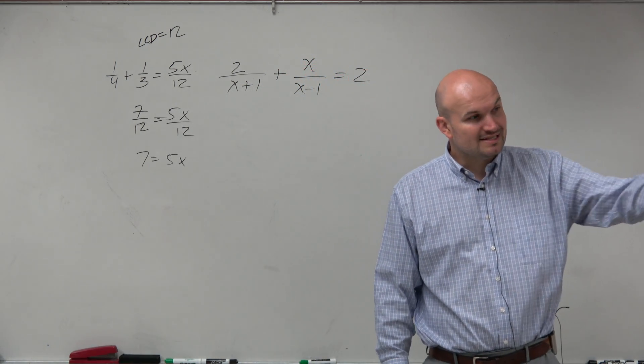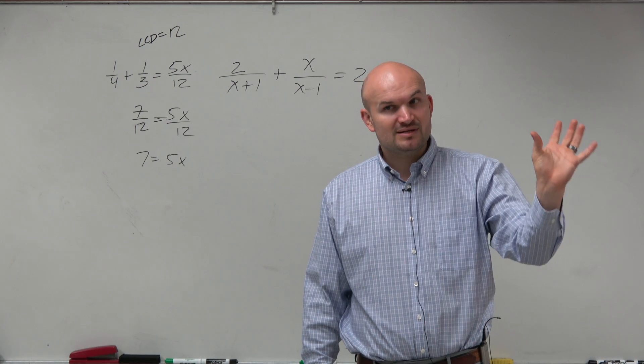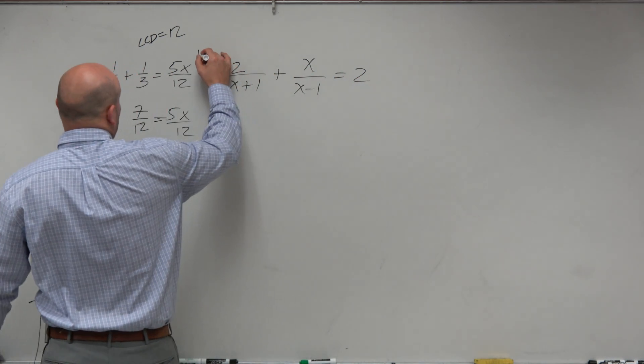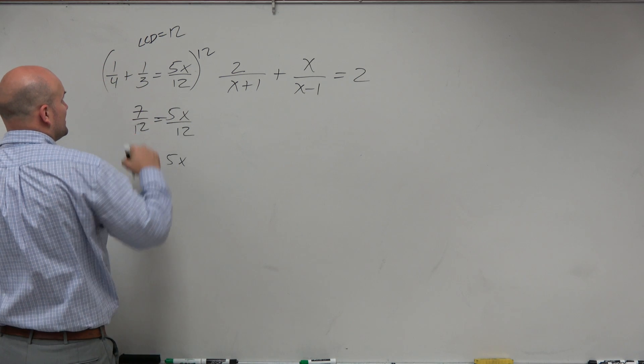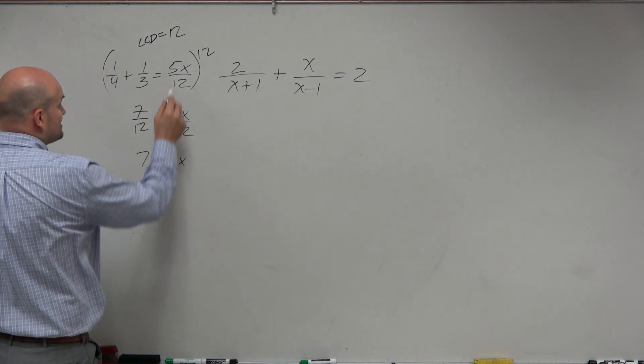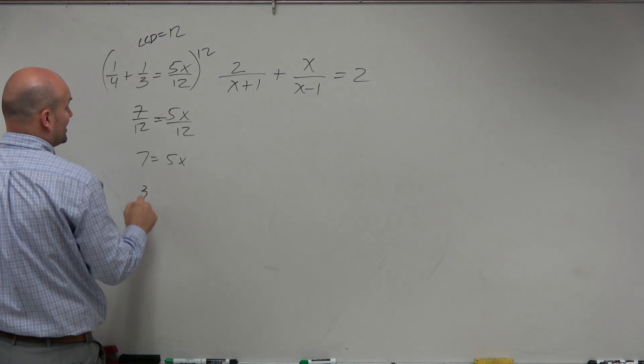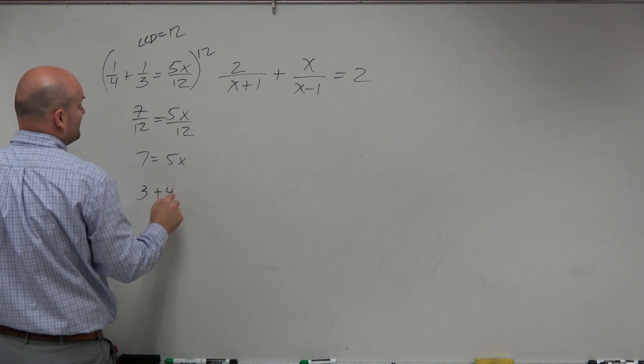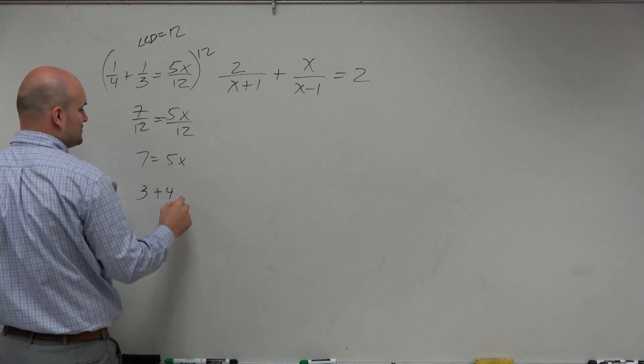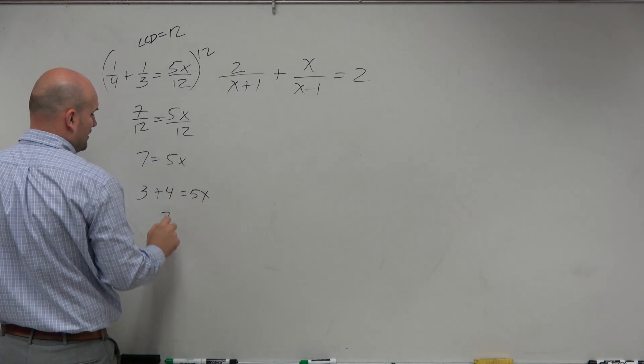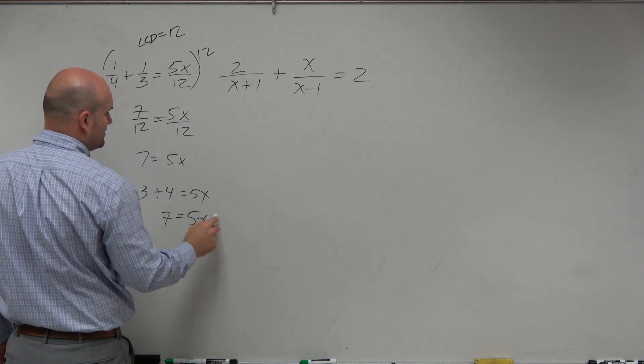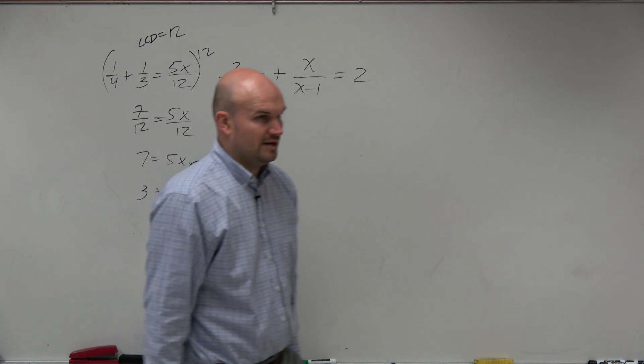To produce equivalent equations, whatever I do on one side, I have to do on the other side. So I'm going to multiply 12 times everything. And when I do that, 12 times 1 fourth is 3, 12 times 1 third is 4, 12 times 5x over 12 equals 5x. And guess what? I get the same setup as I would if I did it the other way.